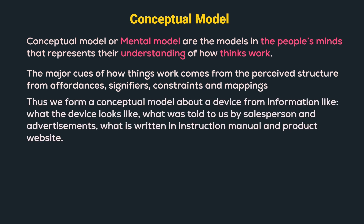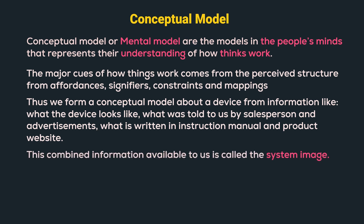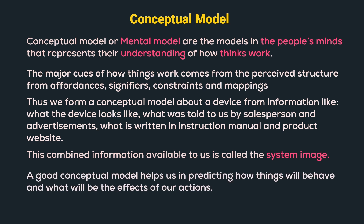We form a conceptual model about a device from information like what the device looks like, what was told to us by the salesperson or advertisements, what is written in the instruction manual, and the product website. This combined information available to us is called the system image. A good conceptual model helps us in predicting how things will behave and what will be the effects of our actions.